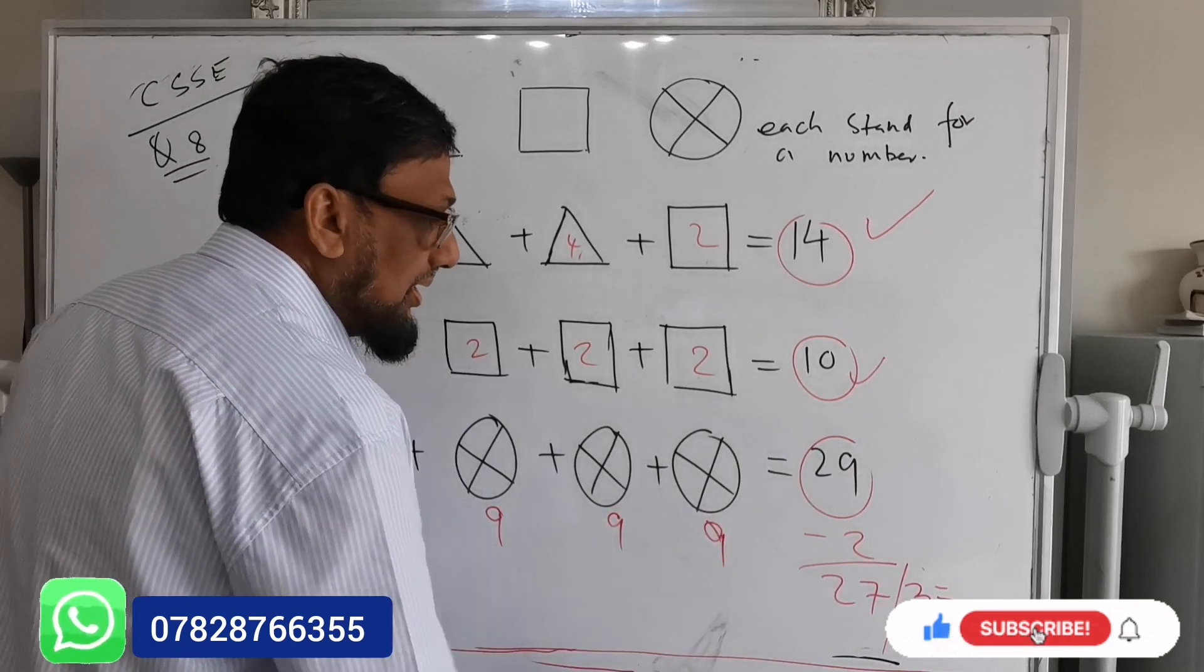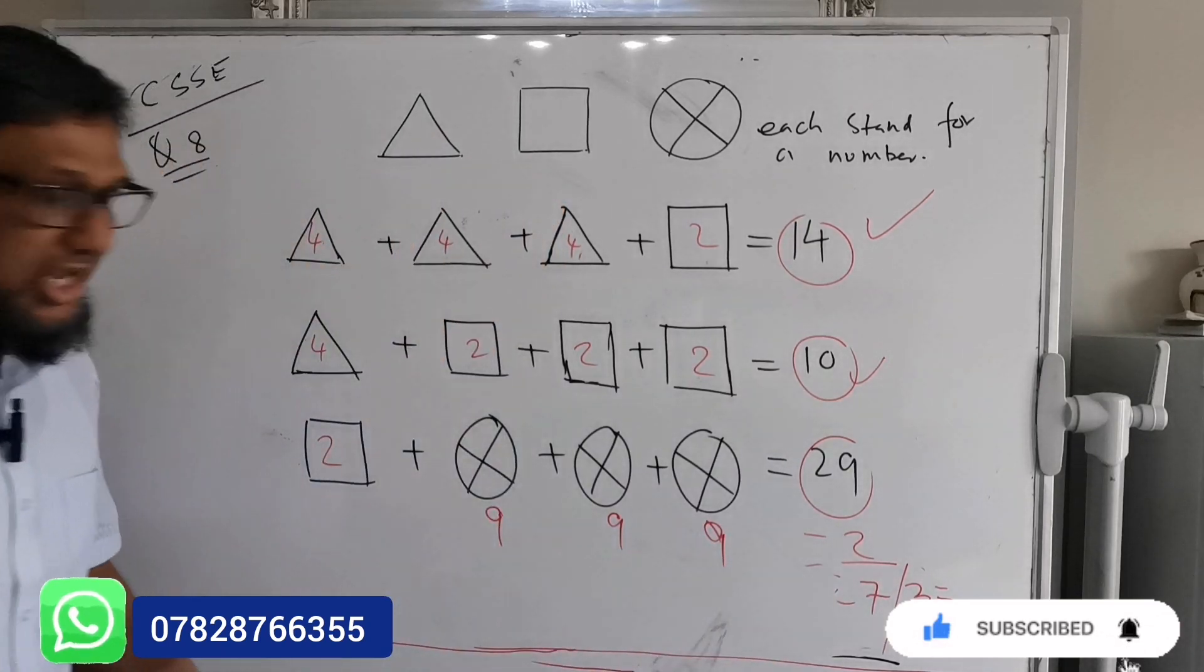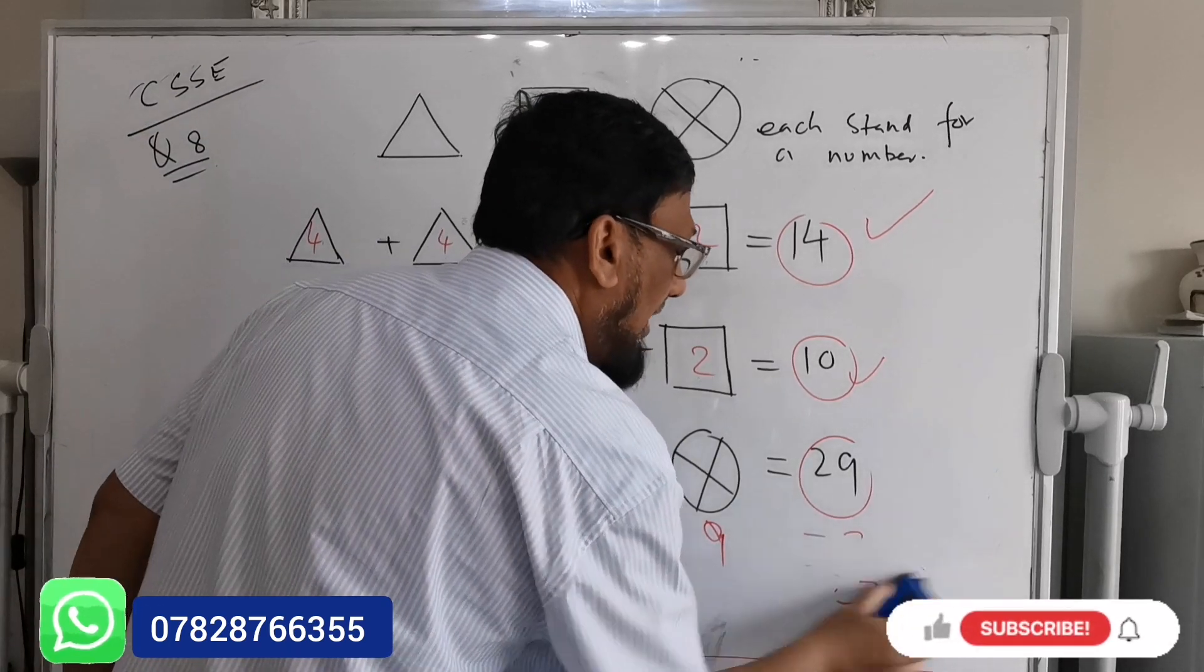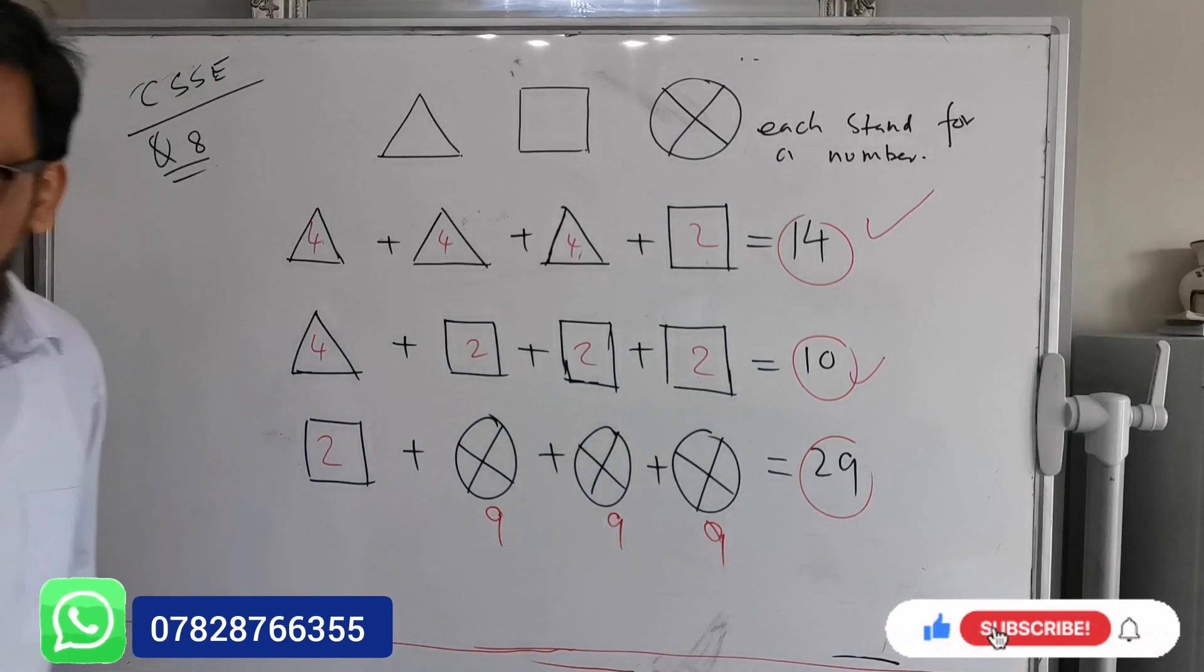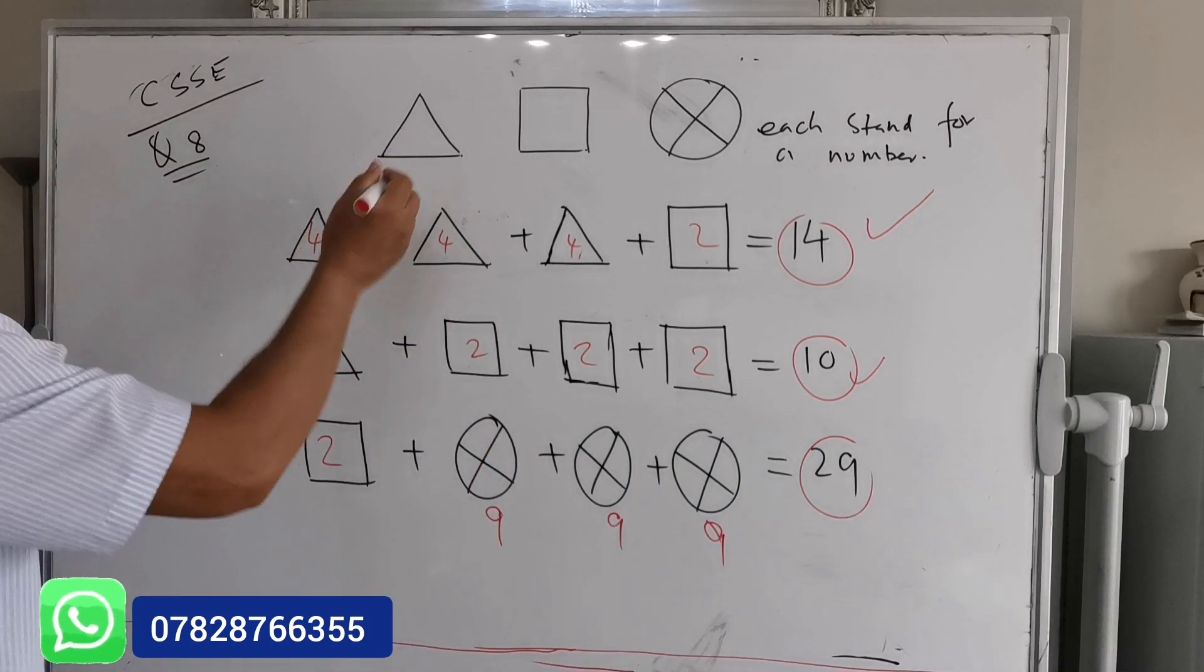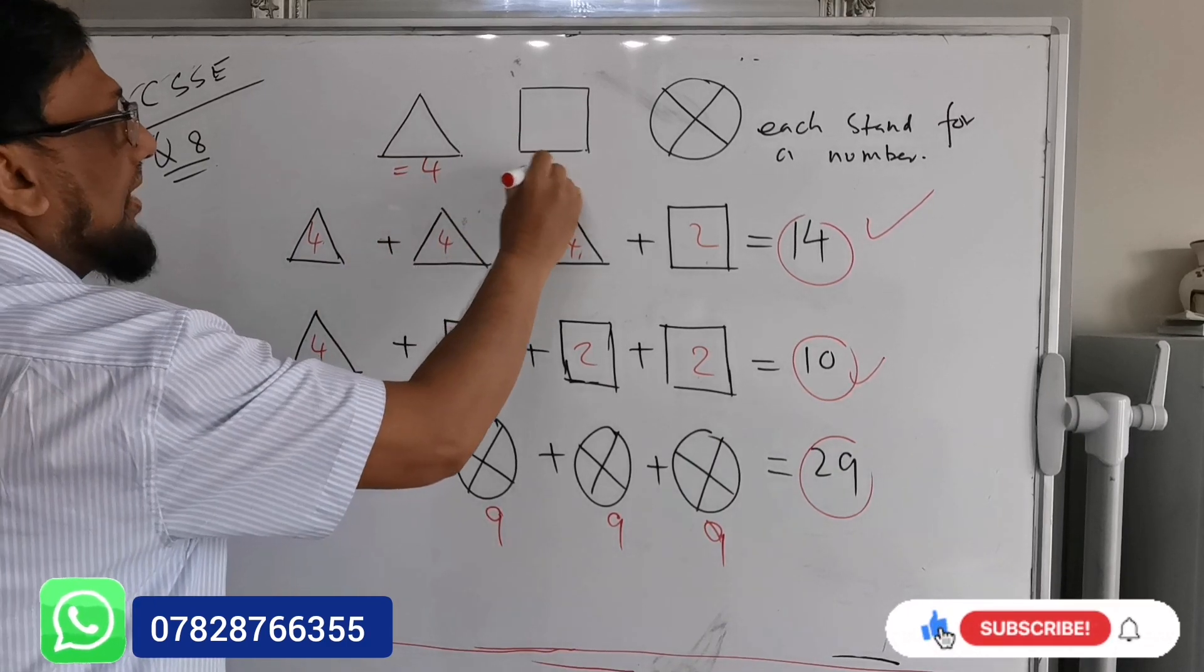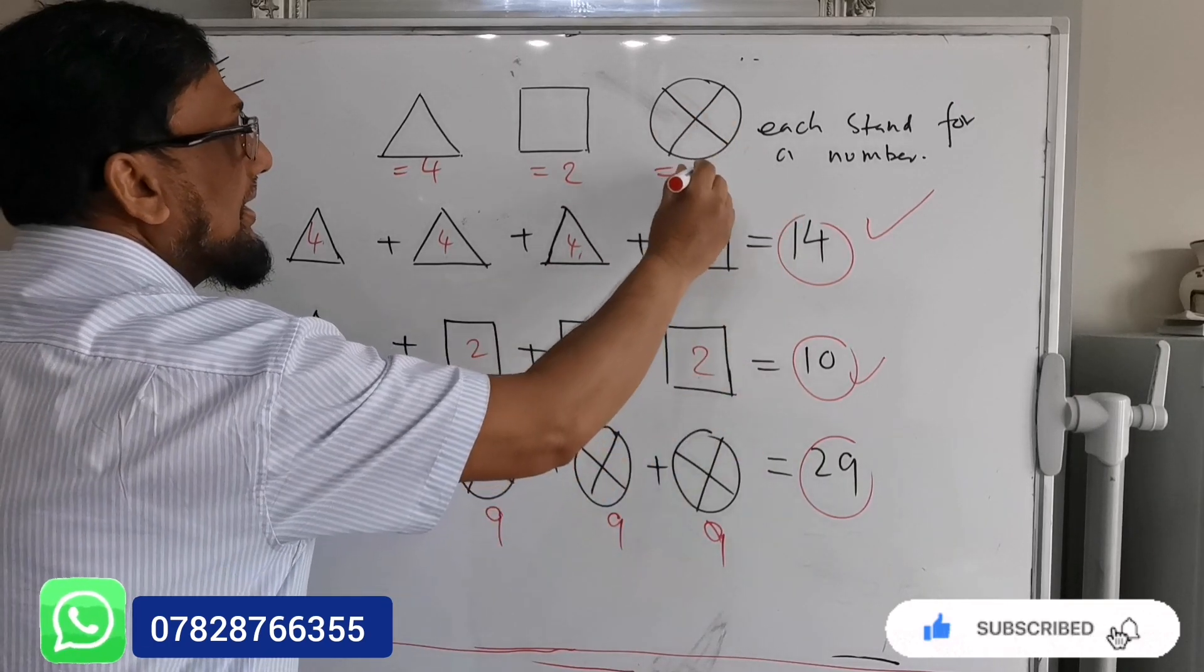So it becomes 29. So it means we worked out the square value will be two, triangle value will be four, and the circle value is nine. So I can write down the answer: the triangle equals four, square value is two, and the circle with a cross is nine.